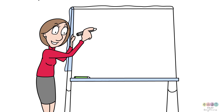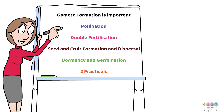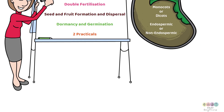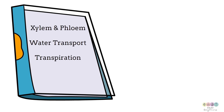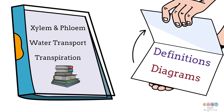The whole topic of sexual reproduction in a flowering plant is really important, particularly gamete formation and the practicals. Know everything about seeds — why are they monocots or dicots? Endospermic or non-endospermic? Know the full story and give detailed bullet points. When you finish sexual and asexual reproduction, go back and revise xylem and phloem — the diagrams are never well known. Water transport too, focusing on transpiration and leaves. Definitions, practicals, and diagrams — please focus on them. The very best of luck.